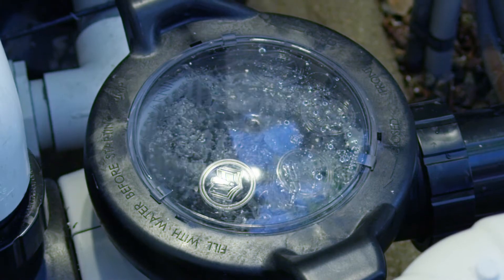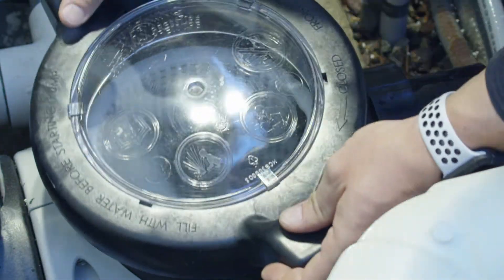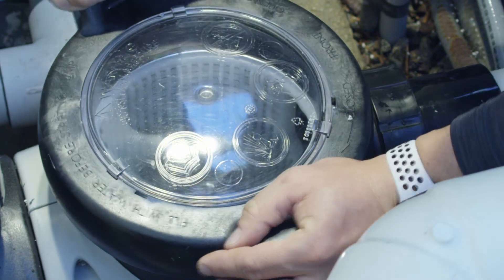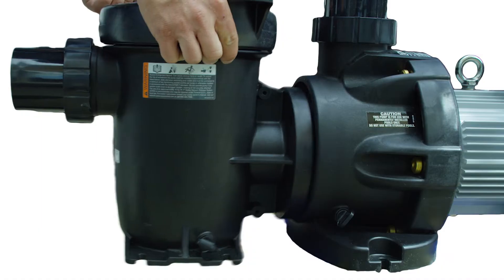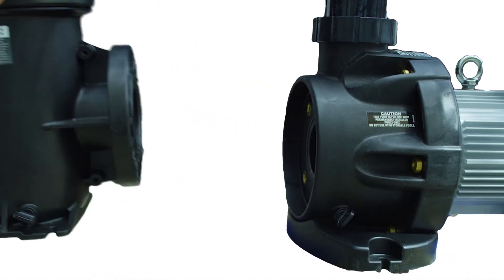The strainer basket, complete with a clear viewing lid and our standard Tri-Lock cover, now offers an extra layer of versatility. Easily remove the remote mountable basket for simple maintenance in conditions when the pump is installed below grade.